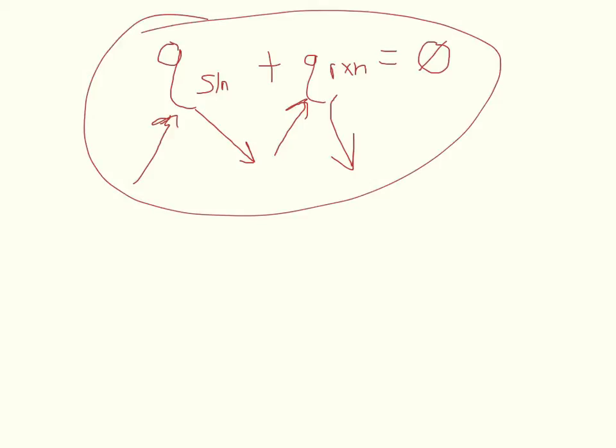So we can set up an equation. We can say that the heat transfer within the solution plus the heat transfer of the reaction is equal to zero. So if heat comes in here, then heat has to go out of here in the same amount. Or if heat leaves here, then it has to go into here in the same amount. So that the overall heat transfer within the system will equal zero.